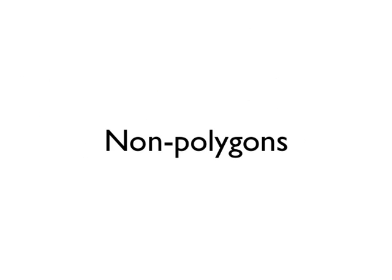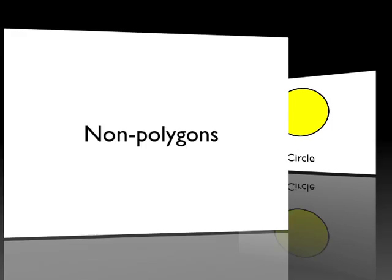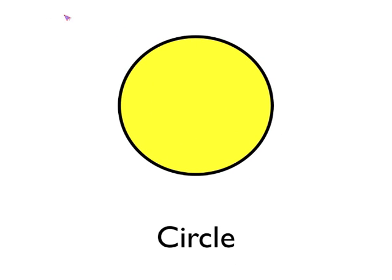So let's have a look now at the most common non-polygons. So here's the most common non-polygon. It's a circle, it has just one curved side.